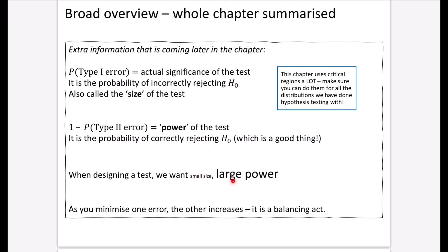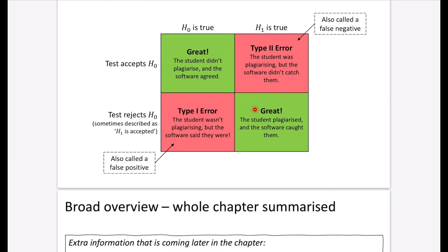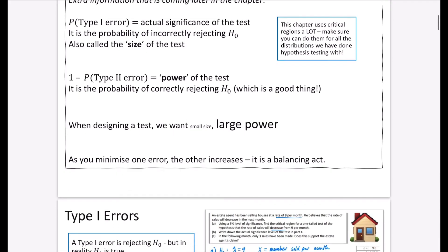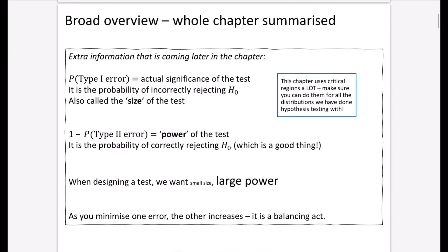Size is doing something incorrectly; power is doing something correctly. What you'll start to realise is, as you minimise one error, the other increases — it's a balancing act. You can't just say let's make both type 1 and type 2 errors as small as possible to maximize the correct outcomes. If you minimise type 1 too much, type 2 can get quite big, and vice versa. Finally, this chapter uses critical regions a lot, so make sure you can find them for all the distributions used in hypothesis testing: geometric, binomial, Poisson, and the normal distribution. I'm going to start drilling down into more on type 1 and type 2 errors in the next videos.